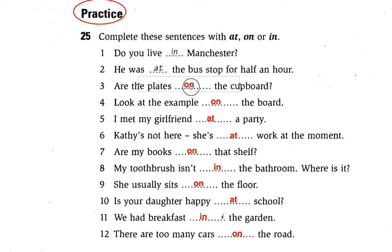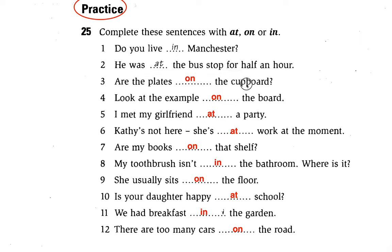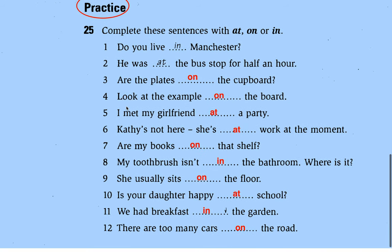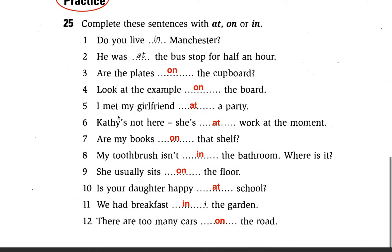Number three: Put the plates on the cup board. 'On' is the answer — preposition of place. Number four: Look at the example on the board. 'On' is the answer — preposition of place.